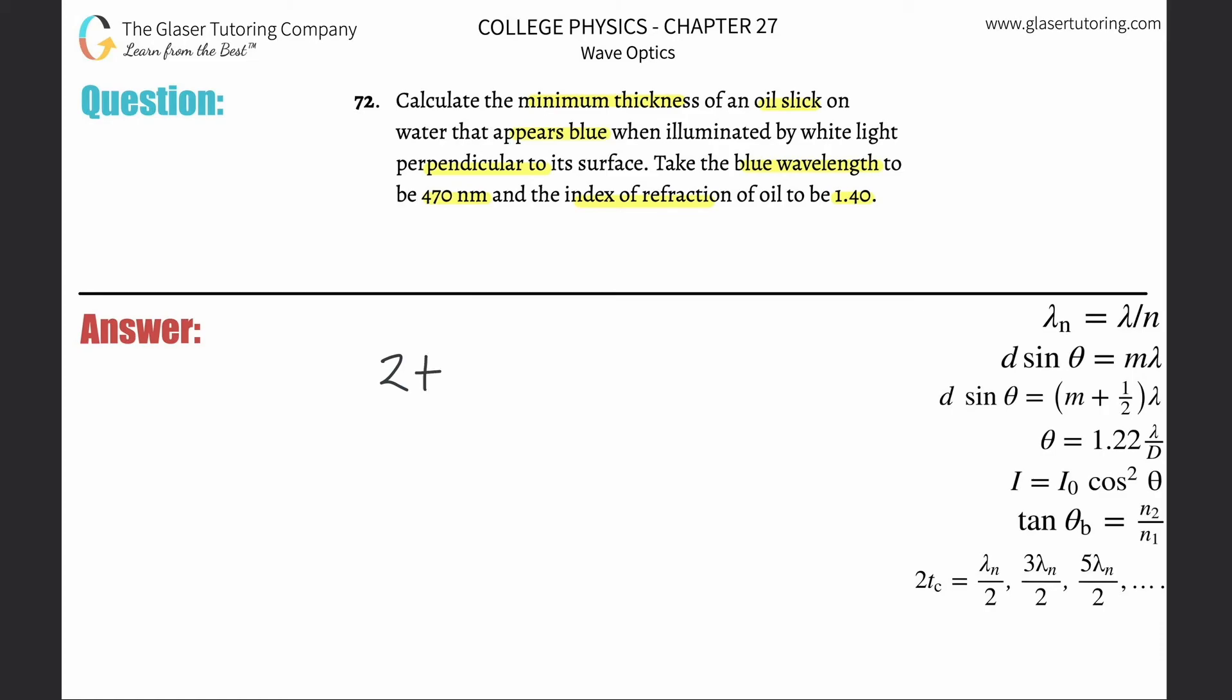This formula here down on the right tells us the thickness for constructive interference. It's going to be equal to some multiple of the wavelength of the light in the medium, in this case in the oil.